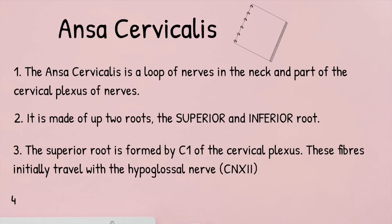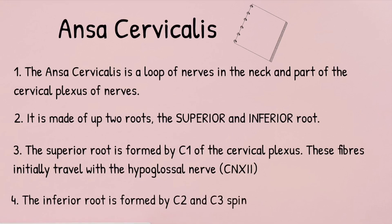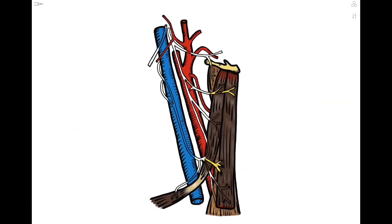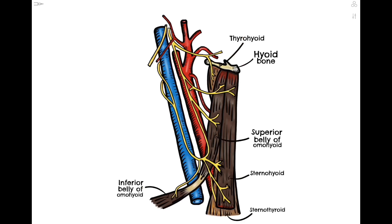Now let's start putting that all into context and have a look at our diagram, which shows some of the structures on the right side of the neck. Let's orientate ourselves around the bones and muscles in this area first. Right at the top in white we have our hyoid bone, which is pretty important as it acts as an attachment for multiple muscles. The muscles that attach to the hyoid bone and continue upwards are called the suprahyoid muscles, and these work to elevate the hyoid and the floor of the mouth to help with swallowing. The ones that attach to the hyoid and continue downwards are called the infrahyoid muscles or the strap muscles, and these are the ones shown here on the diagram.